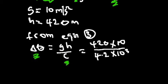And that will be 420 multiplied by 10 divided by 4.2 times 10 raised to the power 3. That will simply give us one degree Celsius.